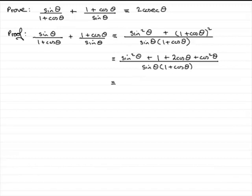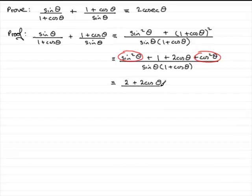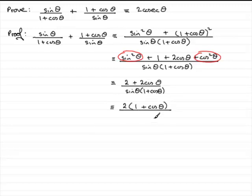On the top we have several terms to tidy up. You should know — I'll circle it here — that sine squared theta plus cos squared theta equals 1. So the 1 from expanding and this 1 together give us 2, leaving us with 2 plus 2 cos theta, all over sine theta bracket 1 plus cos theta. We can now pull out a common factor of 2 from the top, giving 2 bracket 1 plus cos theta.